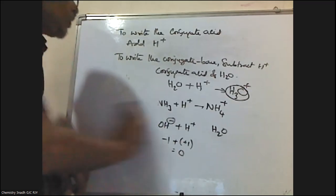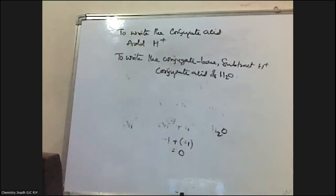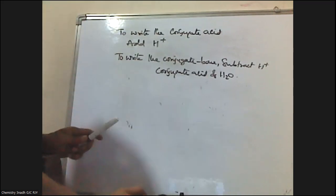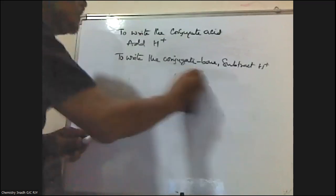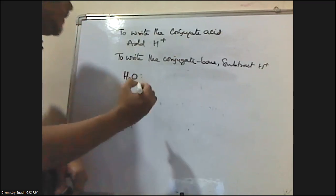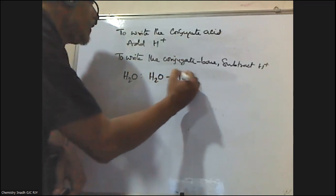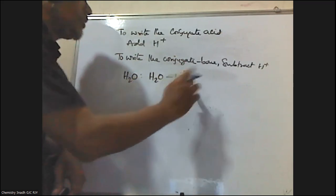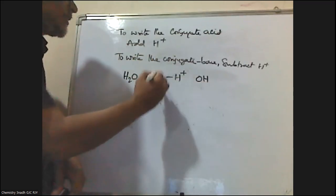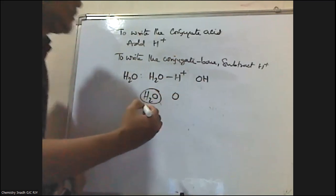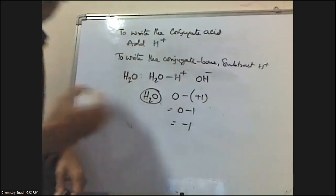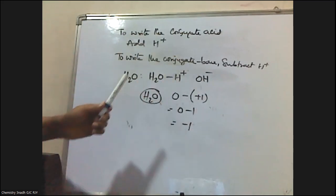Similarly, to write the Conjugate Base, we subtract one proton. Let me take H2O. H2O minus H⁺: H2O has two hydrogens; if we subtract one hydrogen, it becomes one hydrogen — OH. For charges: H2O has no charge, zero, minus plus one gives zero minus one, which is minus one. So the Conjugate Base of H2O is OH⁻.